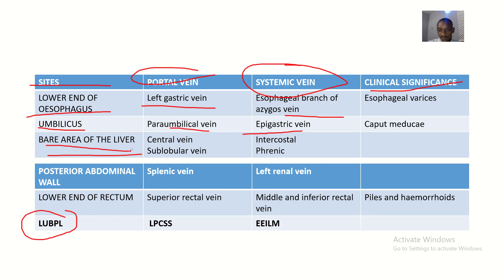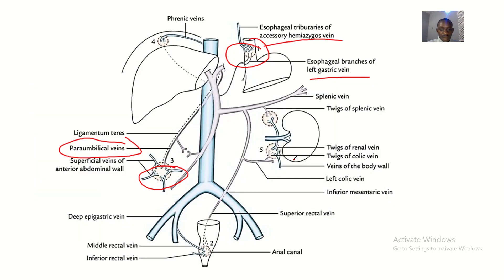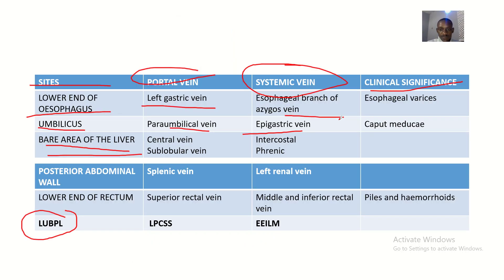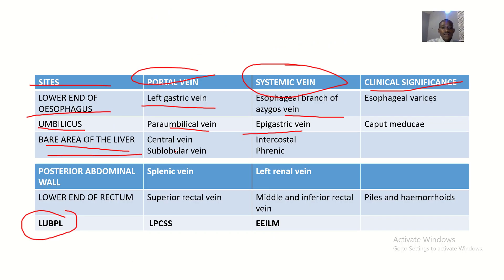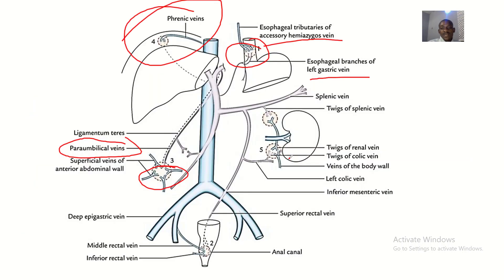At the bare area of the liver, the central vein and sublobular vein are the portal contributions, while the intercostal and phrenic veins are the systemic contributions. At the posterior abdominal wall, the splenic vein and left renal vein are anastomosing.